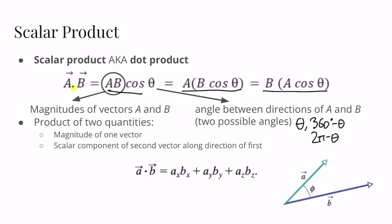The dot product gives us the magnitude of one vector multiplied by the scalar component of the second vector along the direction of the first vector. In the lower right corner we have vector B, and B cosine θ is the scalar component of B along the direction of A. So the result has the magnitude of one vector but projected along the direction of the first vector — this would be B cos φ as shown here.